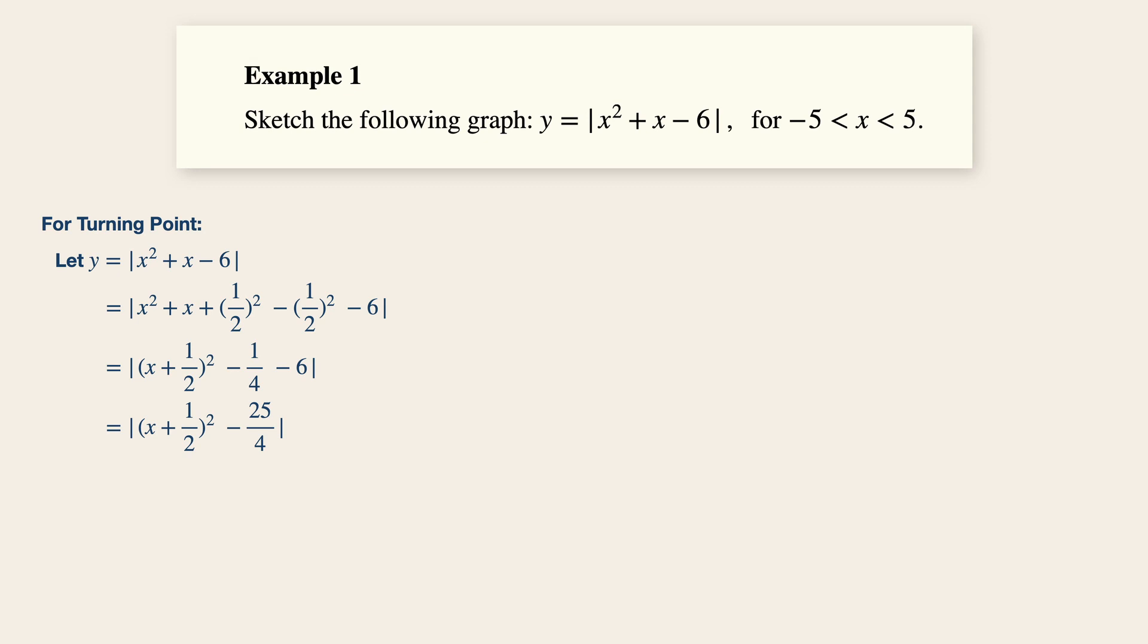Now, this is the point where we could find the coordinates of the turning point, which is minus half and plus 25 over 4. Now, the original coordinates are actually minus half, minus 25 over 4. But because of the modulus sign, the y value of that turning point has become positive.